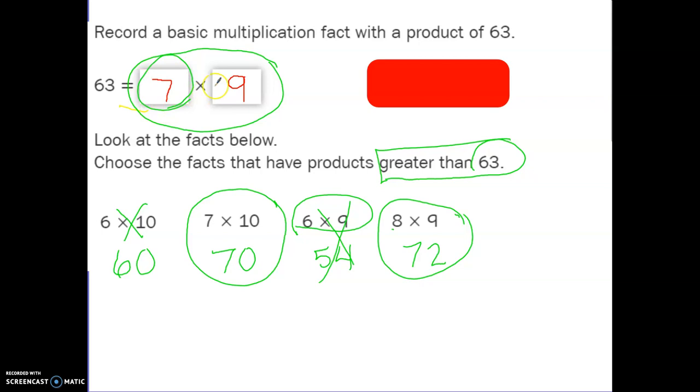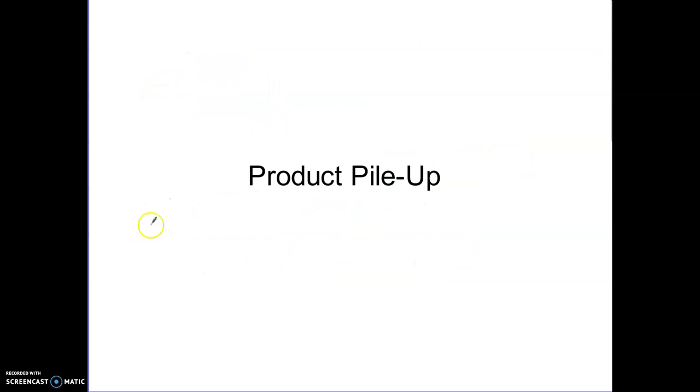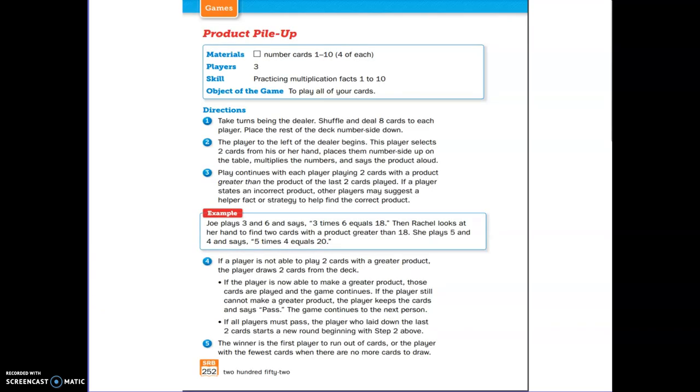Okay, so we're going to play - I'm going to give you the directions to play the game called Product Pile-Up. I have put these directions in your folder, but let's go through them. You're going to need your number cards, all the 1s, 2s, 3s, 4, 5, 6, 7, 8, 9, 10s. This is a game for three players, and the skill is to practice your multiplication facts of 1 to 10. The object of the game is to play all your cards.